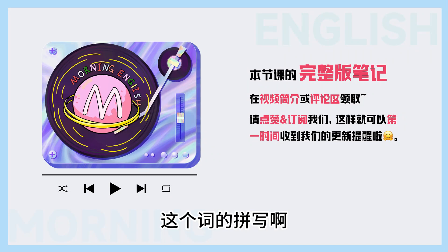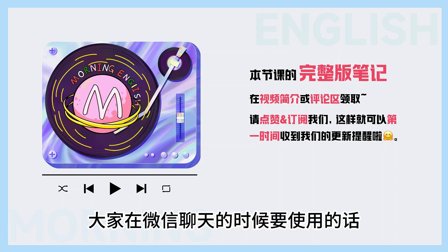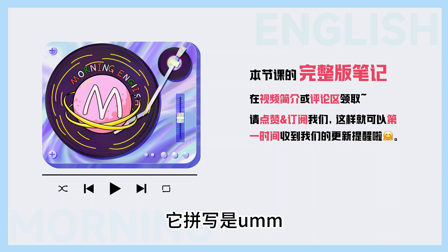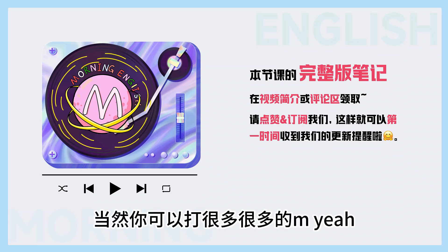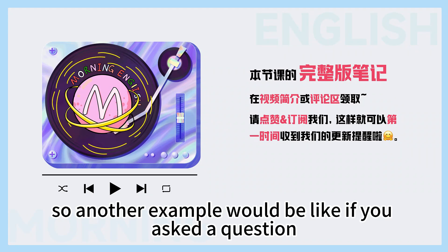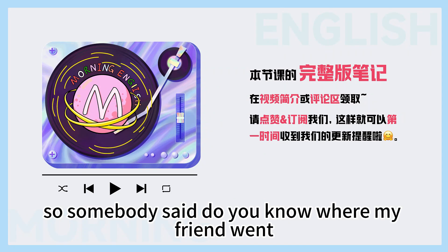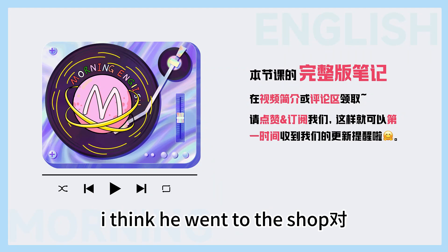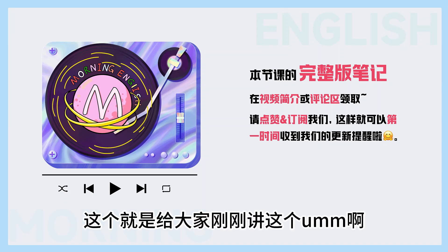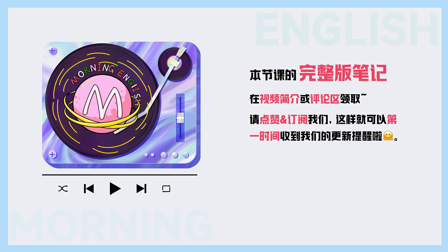如果说这个词的拼写，如果说大家在微信聊天的时候要使用的话，它拼写是U-M-M。当然你可以打很多很多的M。So another example: if you were asked a question, somebody said, 'Do you know where my friend went?' And you would say, 'Um, I think he went to the shop.' 对，这个就是给大家刚刚讲这个U-M-M，这是第一个。